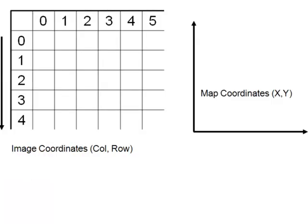One thing to keep in mind is the relationship between columns and rows and our map coordinates. As we go from left to right, the column number increases, and in most map coordinates the X value also increases — so there's a positive relationship between image column and map X. However, as we go down, the row number increases, but in planar coordinates the Y value decreases, so there's a negative relationship.